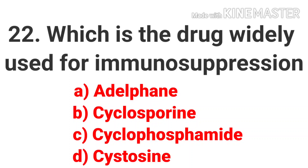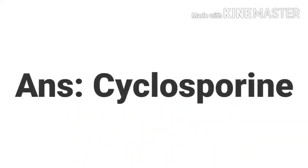The twenty-second question is: which drug is widely used for immunosuppression? Options are Adolphin, Cyclosporin, Cyclophosphamide, and Cytosine. The answer is Cyclosporin.